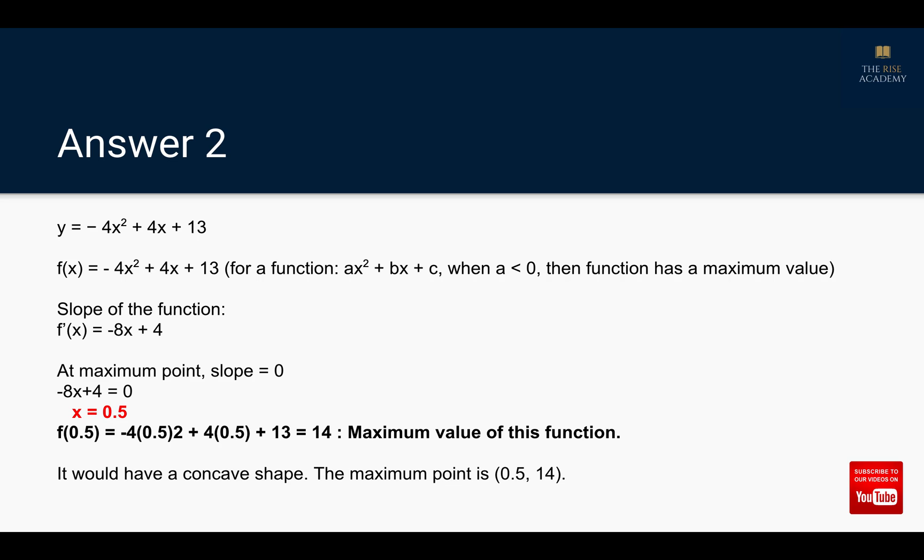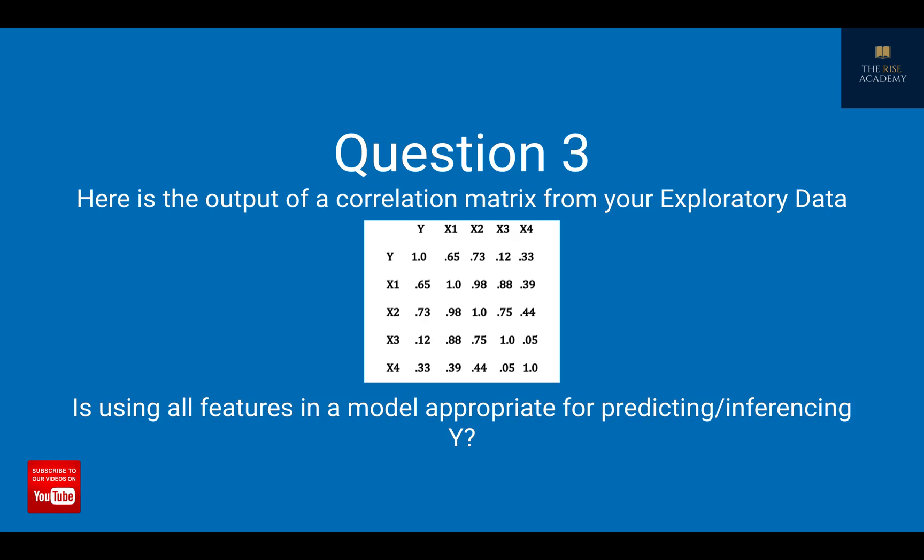The third question has two parts. There is a correlation matrix, and the question is: is using all the features in a model appropriate for predicting or inferencing Y? In this correlation matrix we have independent variables x1, x2, x3, and x4, and our dependent variable Y. We see that all the variables are pretty highly correlated to each other.